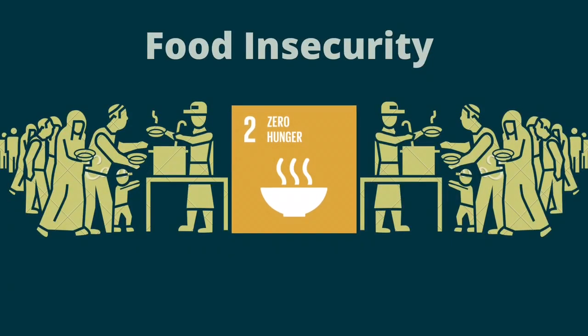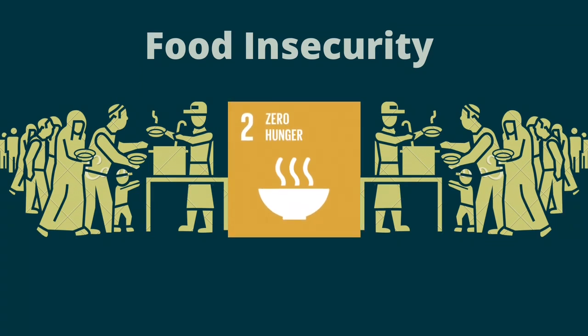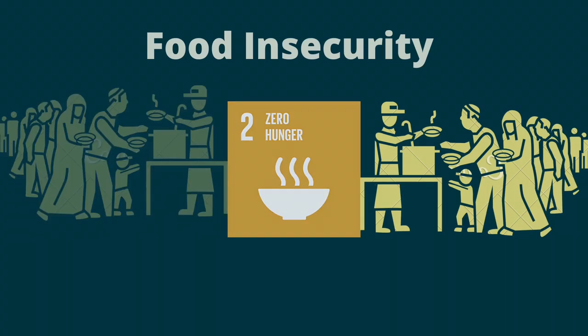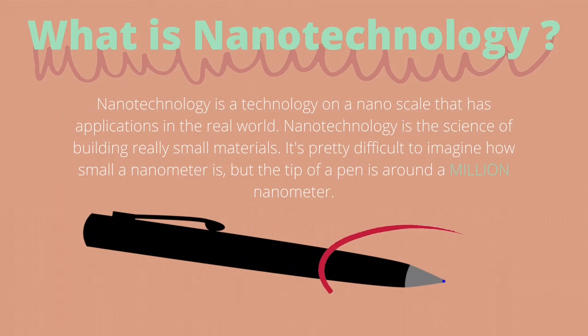Living free from hunger is a basic human right. However, some communities still experience household food insecurity. The importance of addressing food insecurity has been recognized through the second goal of Sustainable Development Goals 2030. One of the most impactful inventions towards food insecurity is nanotechnology in agriculture.